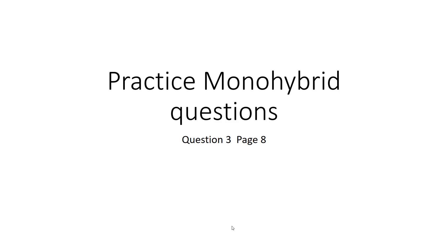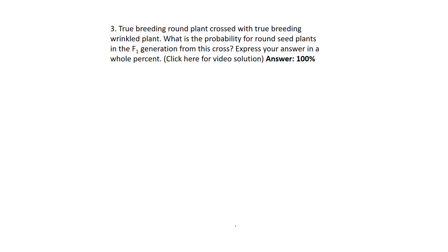Okay, practice monohybrid question—sorry, question three, page eight. That's what you should see there. Let's go through the question. It says true breeding round plants, under the assumption that the legend still exists from when we talked about seed shape.